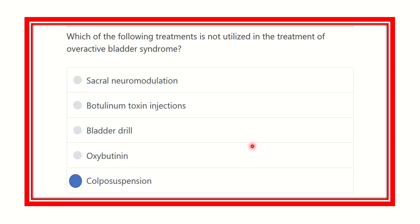So here we can see that all options — sacral neuromodulation, botulinum toxin injection, bladder drill, and oxybutynin — are all treatments of the overactive bladder. Only colposuspension is used for stress incontinence of the bladder. Thank you all.